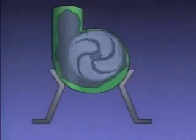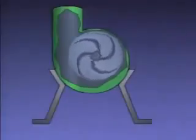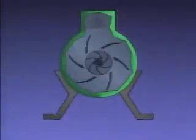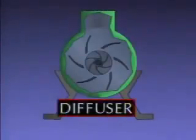Radial thrust is a type of thrust that tends to move a pump shaft perpendicular to its axis. In a pump with a volute, radial thrust is created by the difference in pressure across the volute. Some centrifugal pumps are equipped with a component that accomplishes the same speed-to-pressure conversion as a volute but minimizes radial thrust. It's called a diffuser.